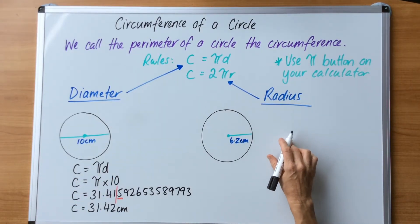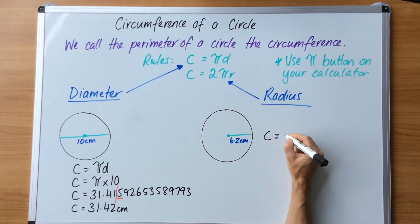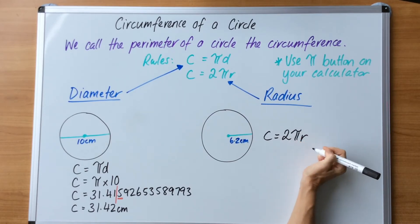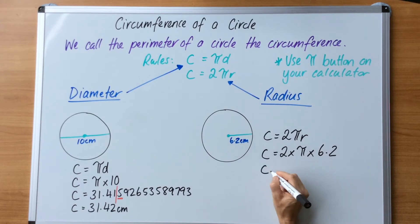Let's take a look at this second question here. This is a radius question, so I know my rule is going to be C equals 2 pi R. My second line is substitution, so I go 2 times pi multiplied by the radius of 6.2.